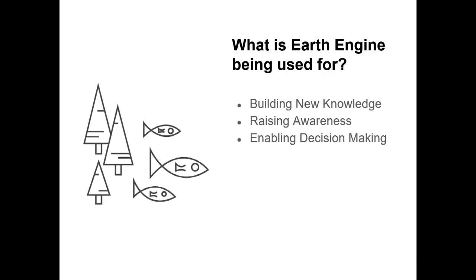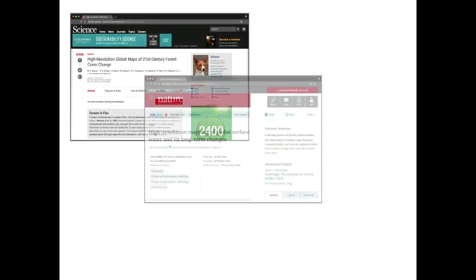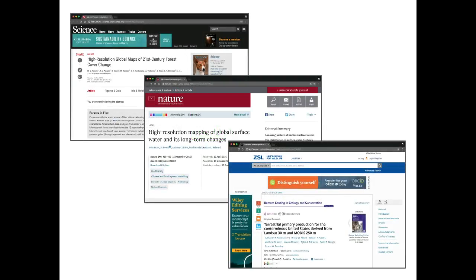We have a lot of different case studies shown on the Earth Engine website — earthenginegoogle.com. I'm going to talk about a few that are relevant for this community. We characterize them into three different areas. The first is building new knowledge. This is what the early use of Earth Engine has been for — academic users trying to prove a new way of deriving information from satellite data, proving something is possible, writing it up and publishing in a prestigious journal.